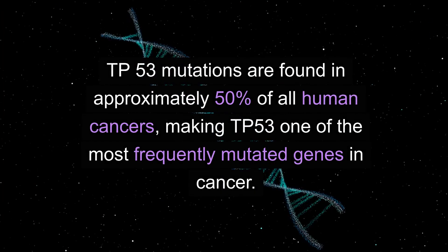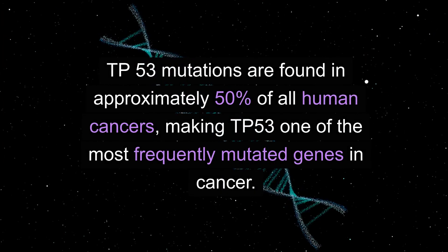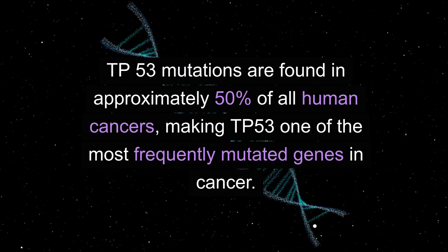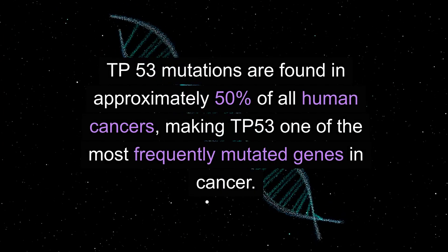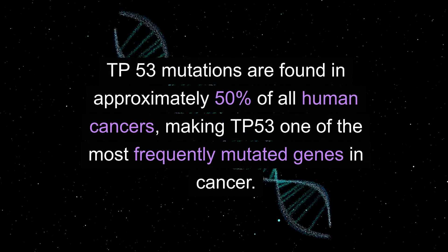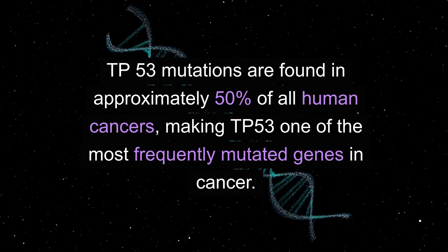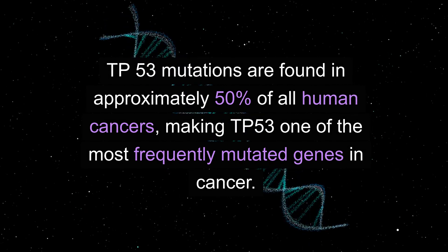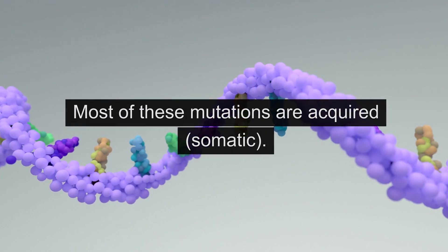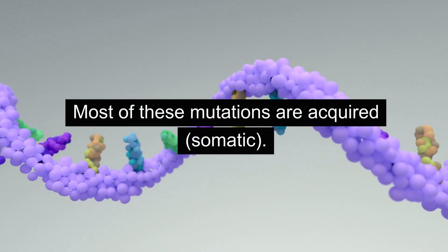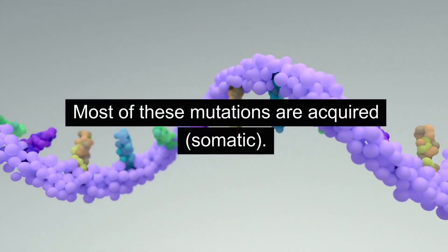TP53 mutations are found in approximately 50% of all human cancers, making TP53 one of the most frequently mutated genes in cancer. Most of these mutations are acquired somatic.